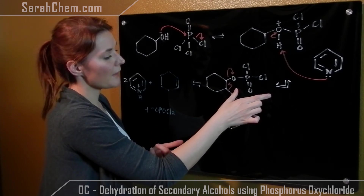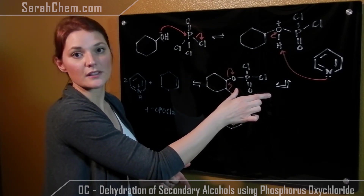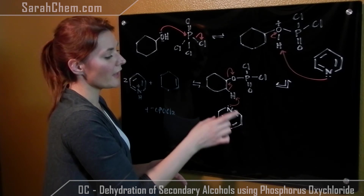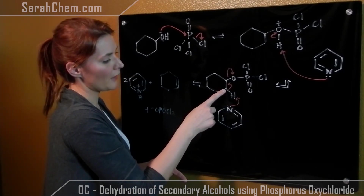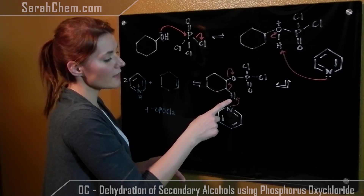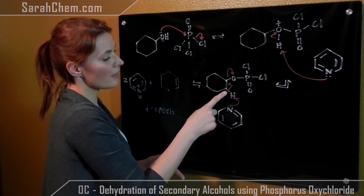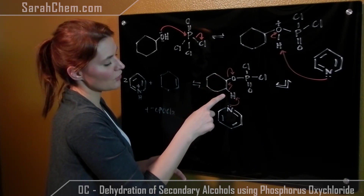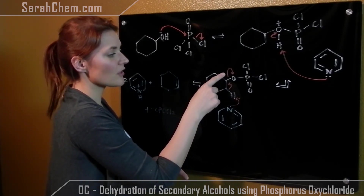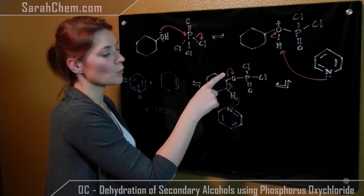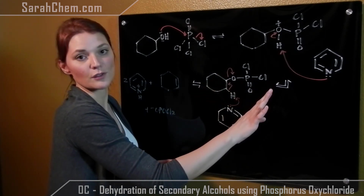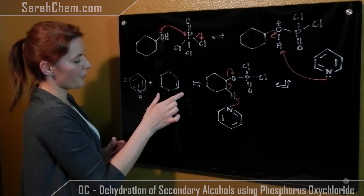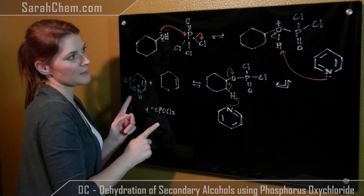The next step is the dehydration E2 step. Our pyridine will come again and deprotonate this carbon group here. Once that proton has been removed, these electrons will drop to form a double bond between these two carbons. The formation of that double bond will precipitate the departure of this leaving group over here. So now at the end of this, we've formed our alkene and these two byproducts.